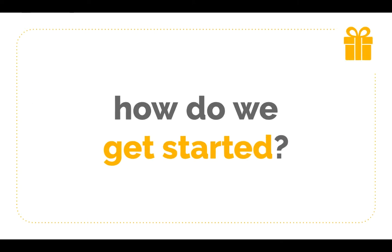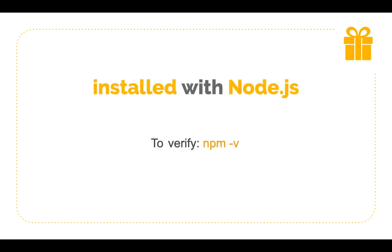So how do we get started? We need to install npm, but the good thing is we have already installed it — it came bundled with Node.js, and when we installed Node.js, npm got installed as well. To verify that we have it, go to your terminal and type npm -v, and if you see a version, that means npm is installed. If not, then you need to install Node.js.